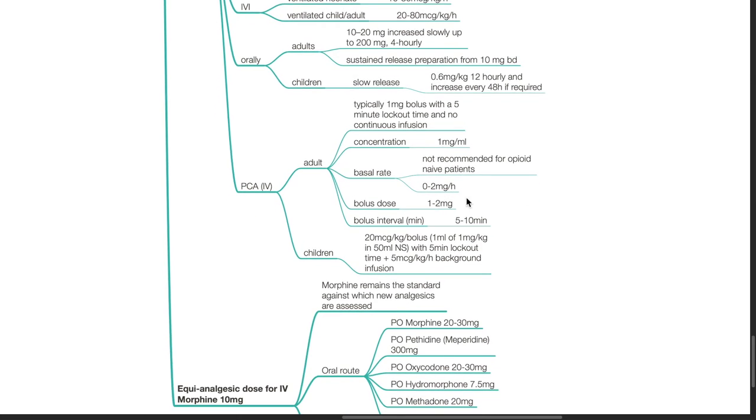PCA dose via IV route. Adult, typically 1 mg bolus with 5 minute lockout time and no continuous infusion. Concentration, 1 mg per ml. Basal rate, not recommended for opioid naive patients. For chronic opioid consumers, 0 to 2 mg per hour. Bolus dose, 1 to 2 mg. Bolus interval, 5 to 10 minutes. For children, PCA dose, 20 mcg per kg per bolus with 5 minute lockout time with 5 mcg per kg per hour background infusion.